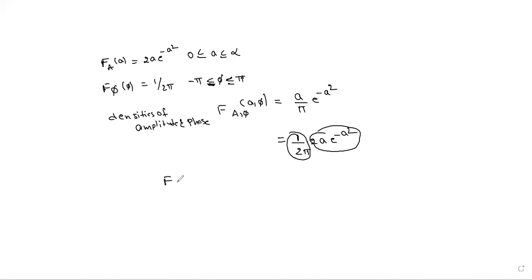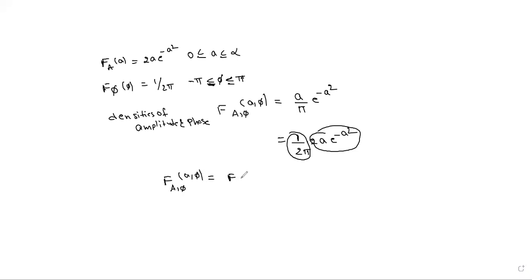f_{a,φ}(a, φ) = f_φ(φ) · f_a(a). This shows the joint density is the product of the marginal densities.